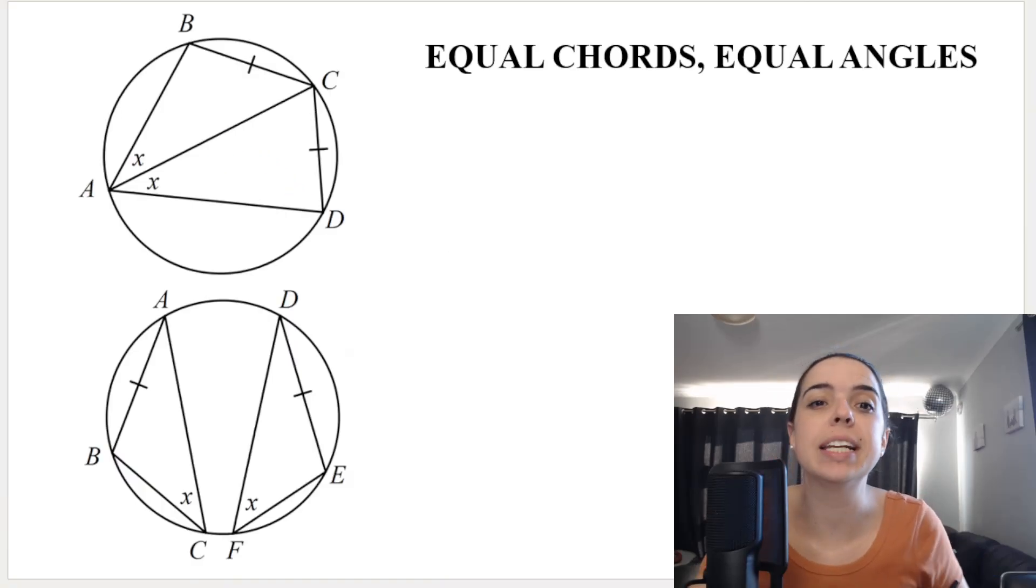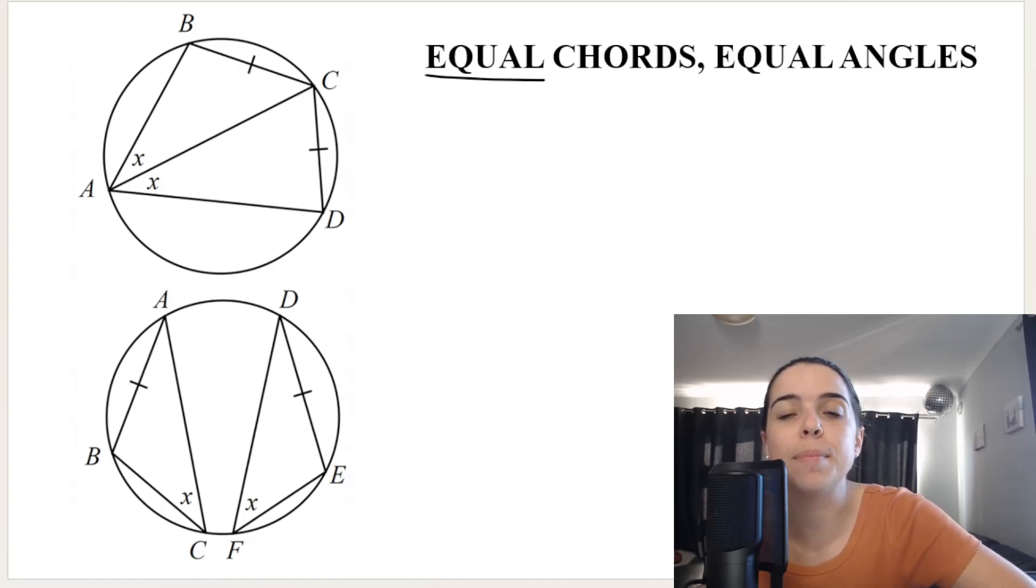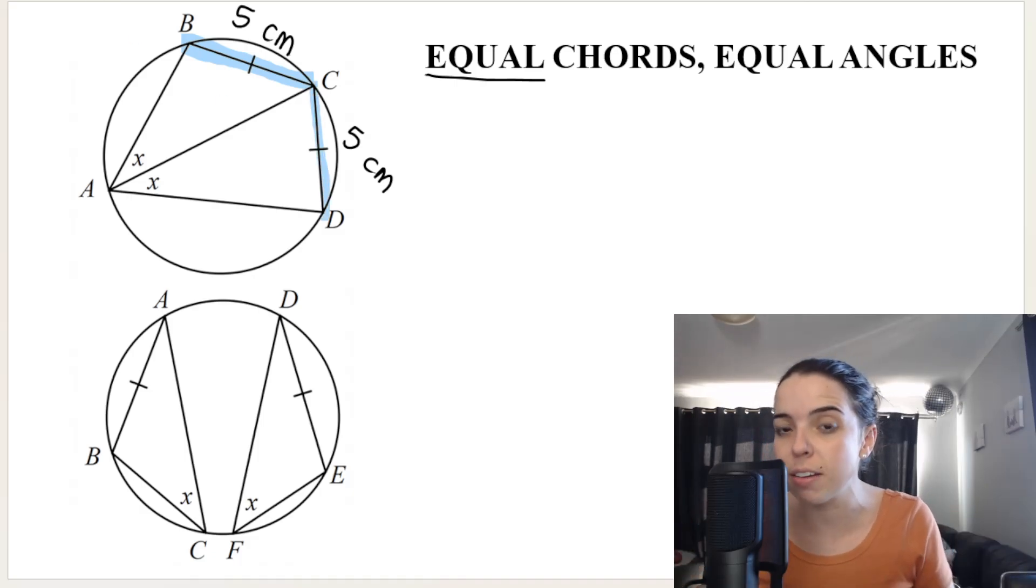And what this theorem basically says is if we have chords that are equal, when I say equal, I mean equal in length. So BC, for example, is five centimeters and CD, for example, is five centimeters. These are both chords from B to C, that's a chord, and CD, that's also a chord. Those are equal chords because they're equal in length.